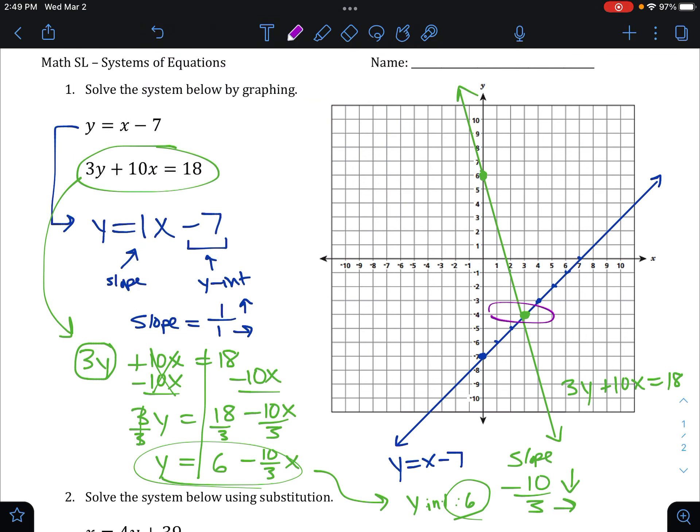Our answer, our solution, is where those two cross. Those two cross at the point 3, negative 4, always the x-coordinate followed by the y-coordinate. That would be our solution, our answer to this problem.